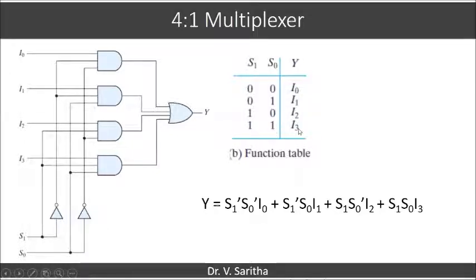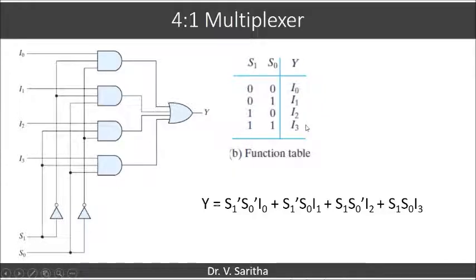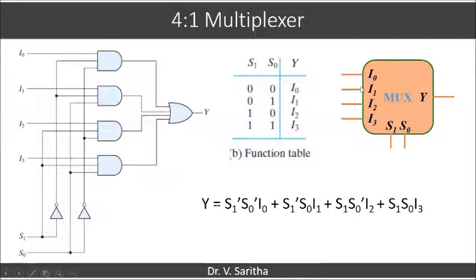When s₁s₀ = 11, y = i₃. Writing the expression for y: y = s̄₁s̄₀i₀ + s̄₁s₀i₁ + s₁s̄₀i₂ + s₁s₀i₃. Drawing the logic diagram from this expression gives us the internal circuit for the 4×1 multiplexer. The block diagram shows 4 input lines, 2 selection lines, and 1 output line.